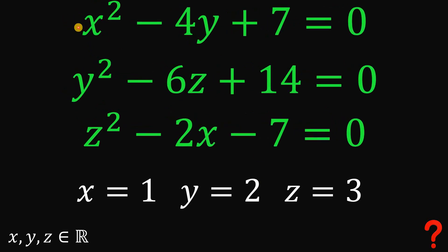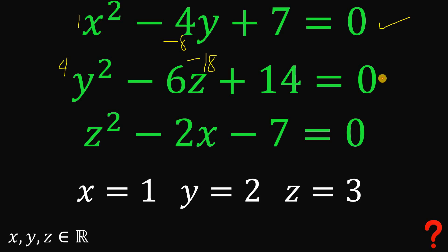Let's verify. If x equals 1: 1 squared minus 4 times 2 plus 7 equals 1 minus 8 plus 7 equals 0. ✓ If y equals 2: 2 squared minus 6 times 3 plus 14 equals 4 minus 18 plus 14 equals 0. ✓ If z equals 3: 3 squared minus 2 times 1 minus 7 equals 9 minus 2 minus 7 equals 0. ✓